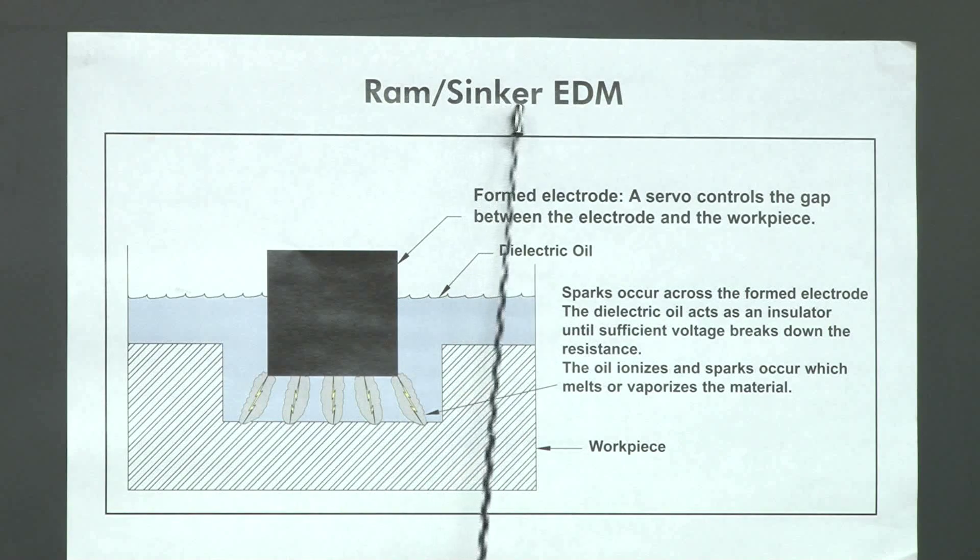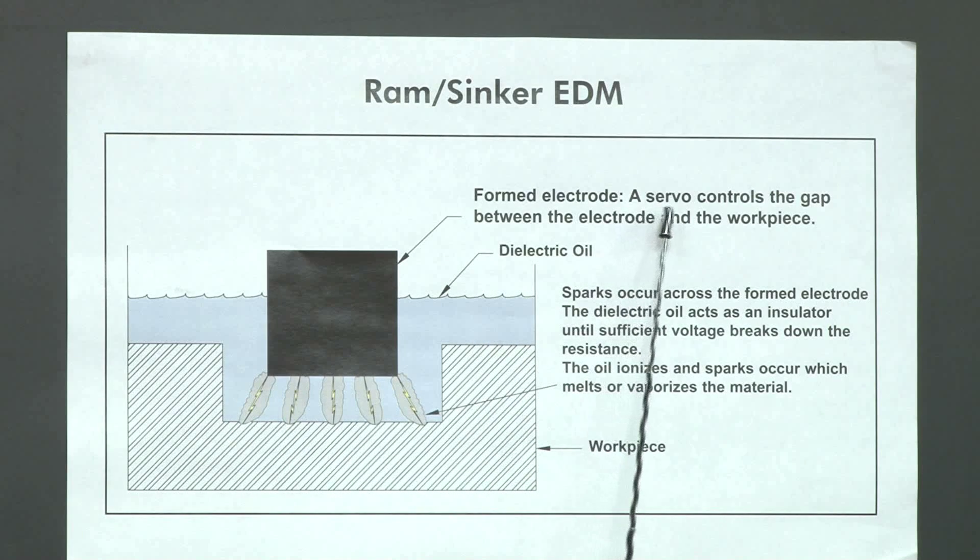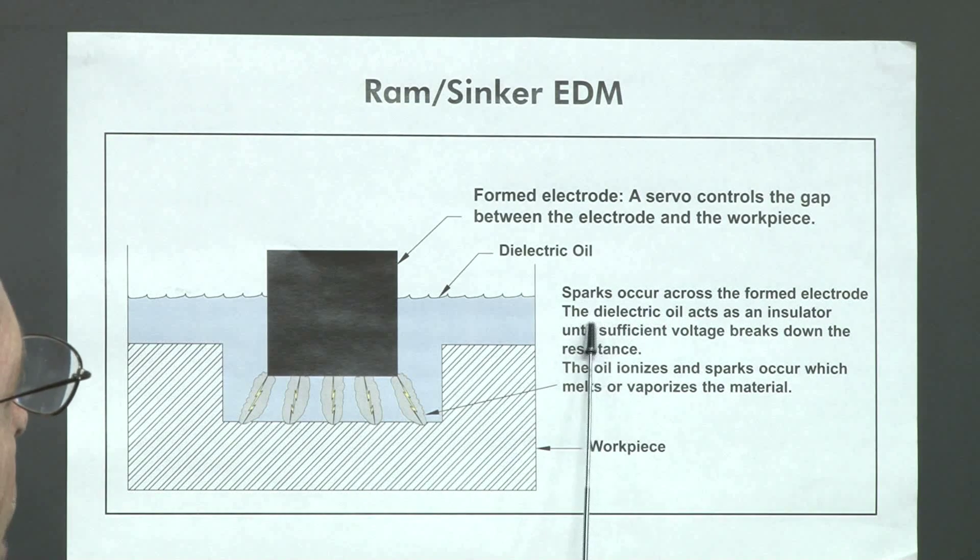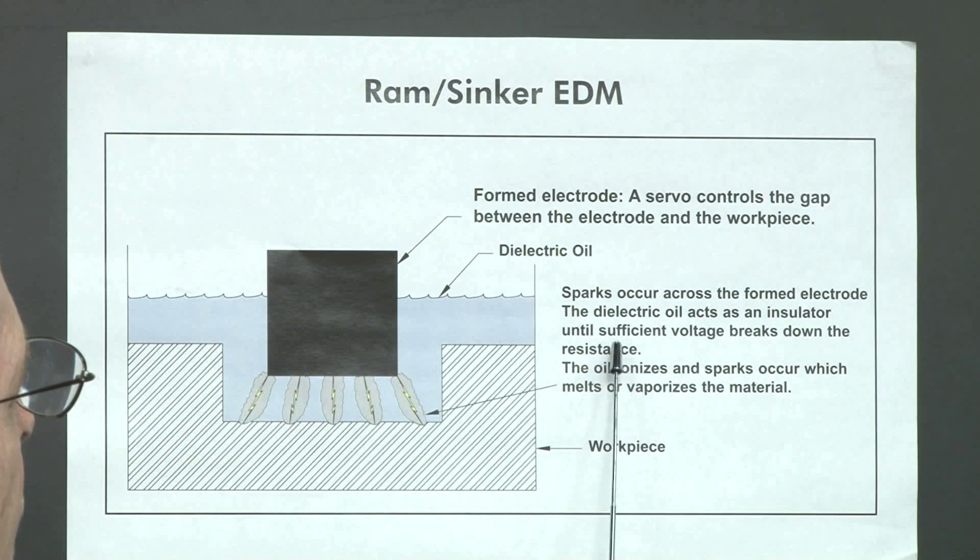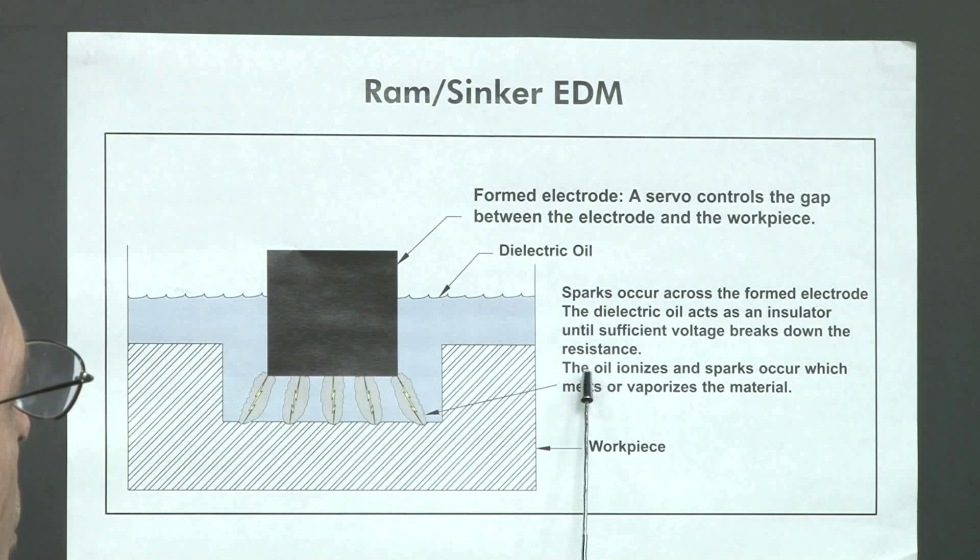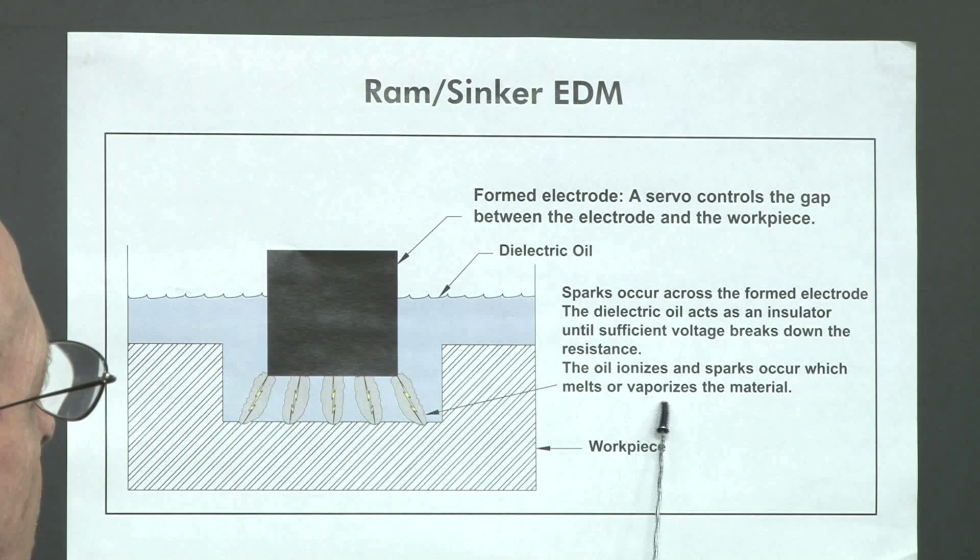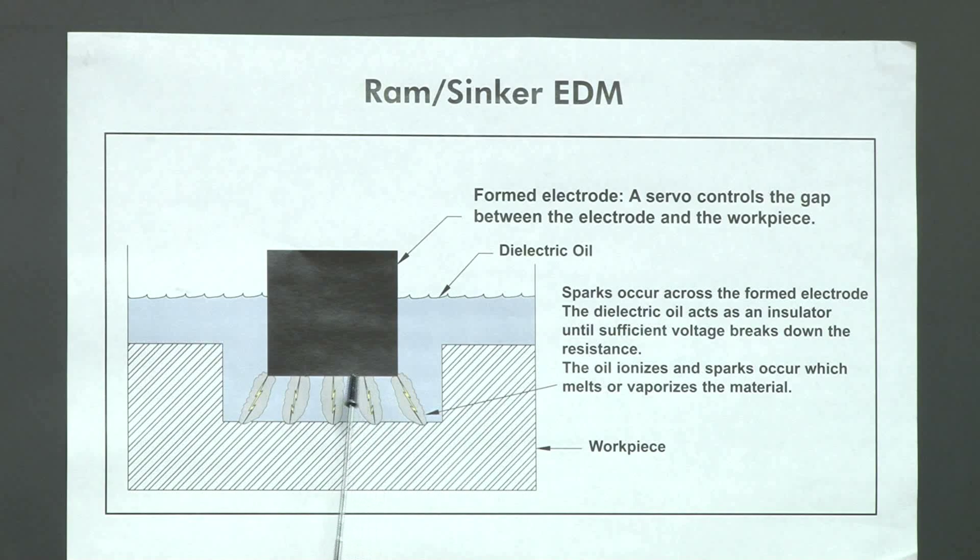RAM EDM is also called Sinker EDM and Plunge EDM. And this is the formed electrode. A servo controls the gap between the electrode and the workpiece. This is dielectric oil. We don't use water with RAM EDM. We use dielectric oil, but it acts like a resistor. Sparks occur across the formed electrode. The dielectric oil acts as an insulator until sufficient voltage breaks down the resistance. The oil ionizes and sparks occur, which melts or vaporizes the material. The electrode never touches the workpiece. And here's a spark, and all EDM is caused by spark erosion.